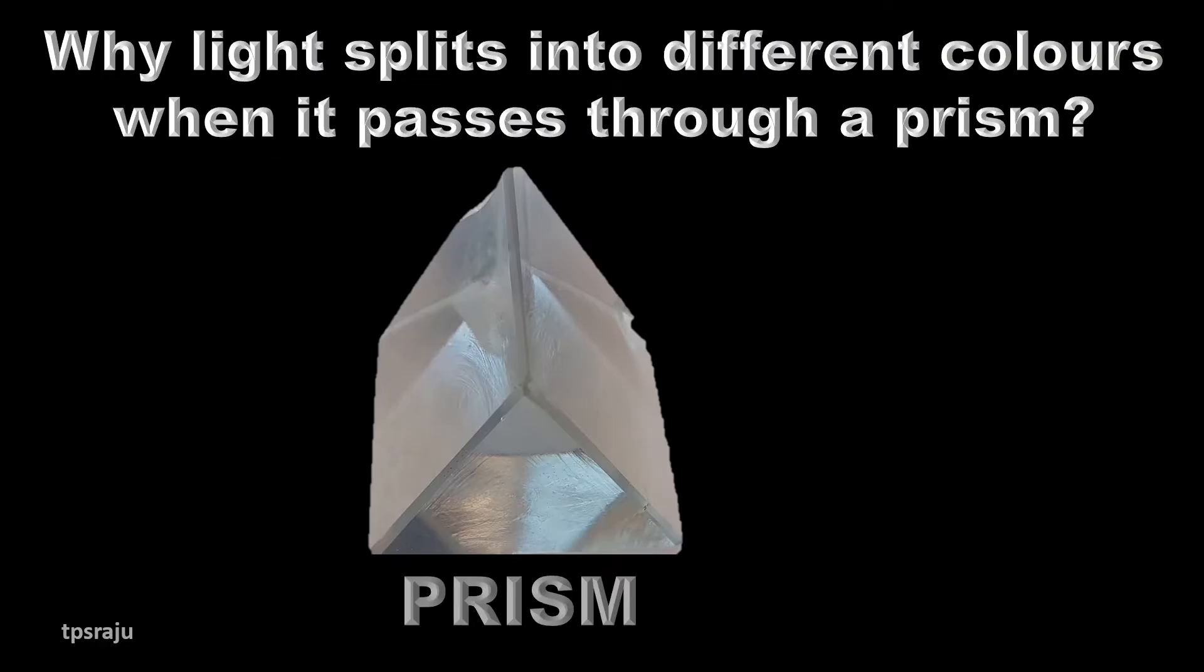Let us understand why light splits into different colors when it passes through a prism. The speed of light is constant in vacuum for all colors, but it depends on the wavelength of light when it passes through a medium. So when white light passes through a medium, each color selects its least time path and they have refraction of different colors to different extents.